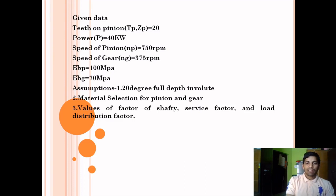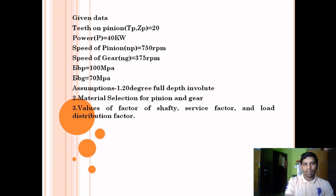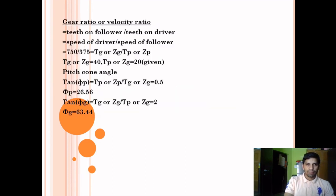We assume three things before solving: first, the gear system is 20-degree full depth involute. Second, for material selection — since static stress values are given (100 MPa and 75 MPa), we can find the materials from the data design book. Third, values of factor of safety, service factor, and load distribution factor are also taken from the data design book.